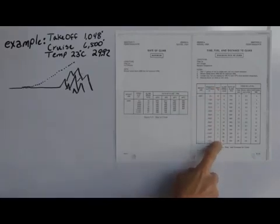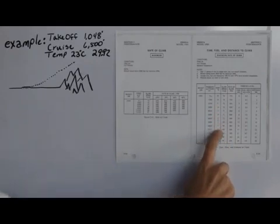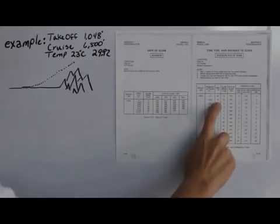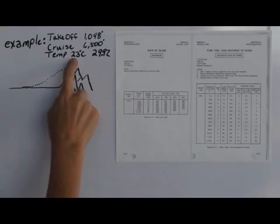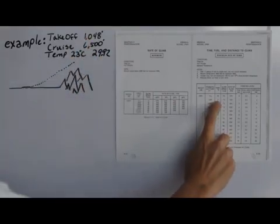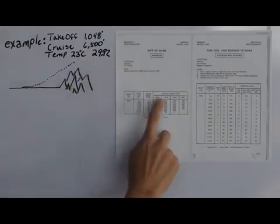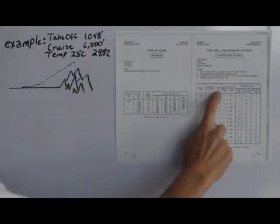And next is our temperature. The temperatures listed here are standard temperature, which is 15 degrees at sea level, and you lose 2 degrees per 1,000 feet in a standard lapse rate. The temperature in our scenario is 23 degrees at our takeoff airport. And standard value was 13 degrees, and we're at 23, so therefore we are plus 10 above standard.